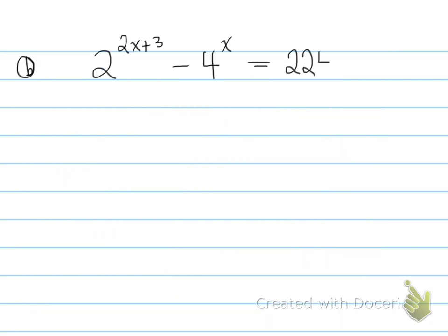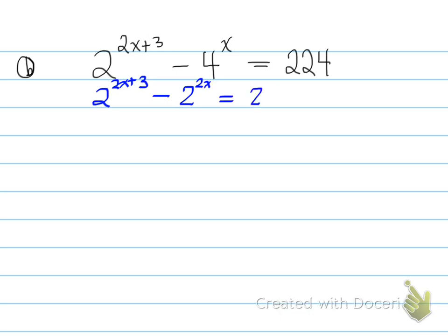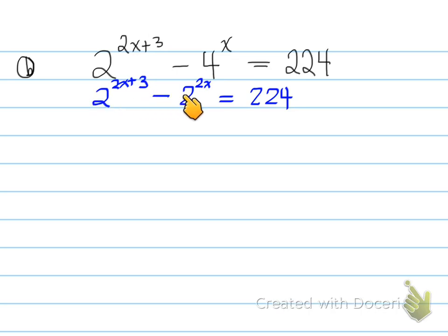Next example, Part B: 2 to the (2x+3) minus 4 to the x equals 224. In the first step, note that these two terms could be made to have the exact same base — and that's exactly what was done. Both are rewritten with base 2 and set equal to 224. The reason is that this helps us proceed toward a solution.